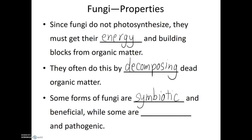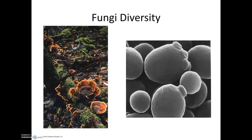Yet some fungi are parasitic and pathogenic. There are a variety of different types of fungi. Often their role in an ecosystem is that of a decomposer, where you'll find them in forests on fallen branches and fallen leaves. Another example of a fungus is brewer's yeast, which is used when brewing beer, making wine, and also as a component in baking bread.